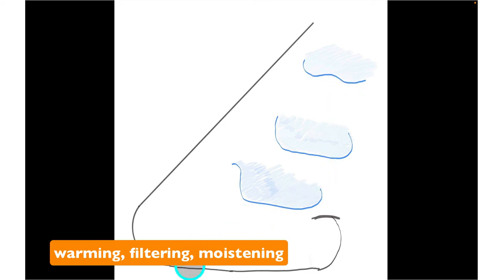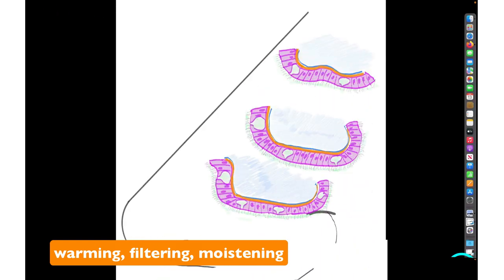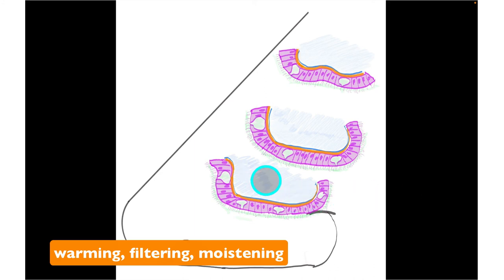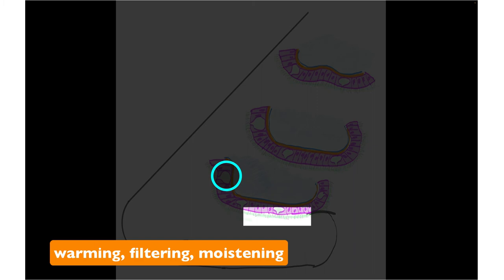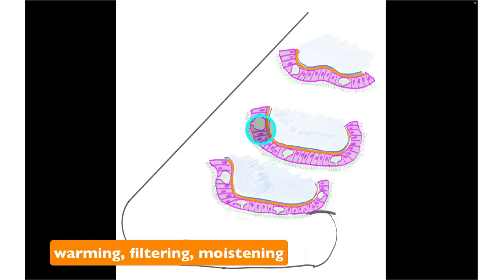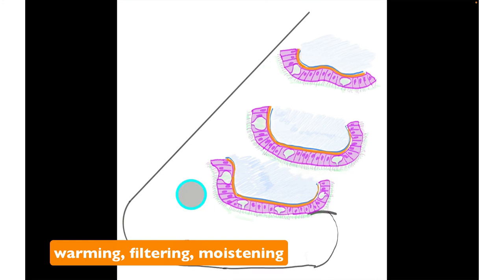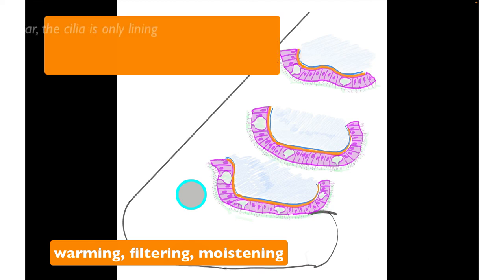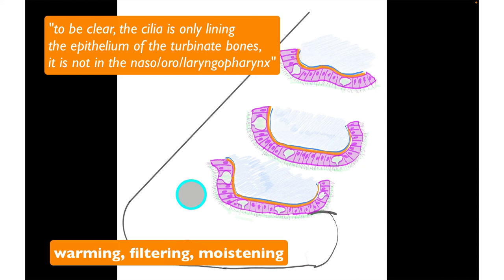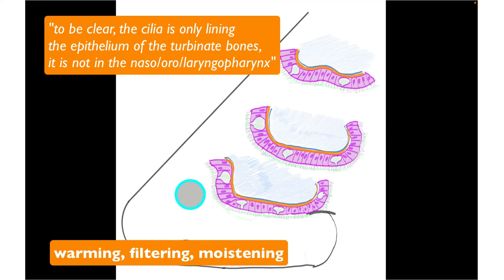There are guard hair cells within the opening of the nares. The turbinate bones are covered with a respiratory epithelium identical to that lining the trachea — covered with cilia. Goblet cells produce mucus, which traps any debris or pathogens entering the nasal cavity. The cilia then sweep that mucus posteriorly into the nasopharynx, oropharynx, laryngopharynx, and into the esophagus, where enzymes are designed to break it down.